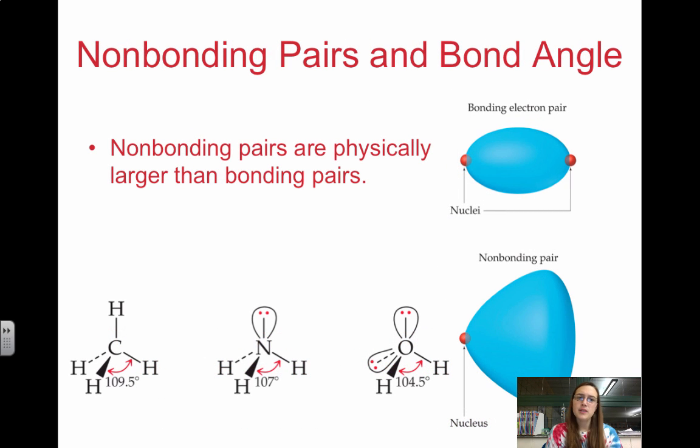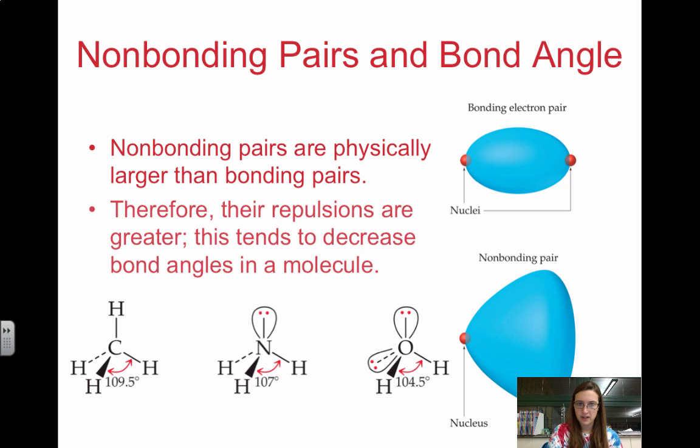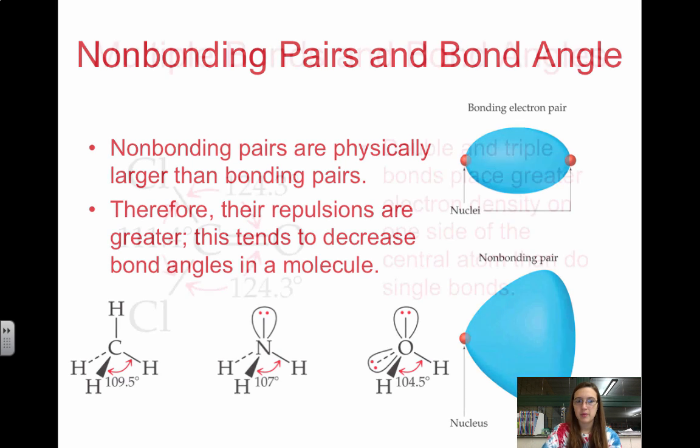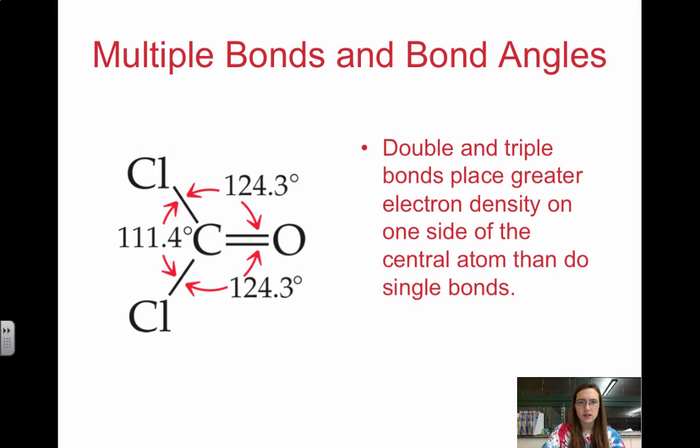As we talk about these non-bonding pairs and bond angle, non-bonding pairs—those are your lone pairs of electrons. Typically, they're larger than bonding pairs, and so they actually will push down on atoms significantly more. Their repulsions are greater, which decreases the bond angles.